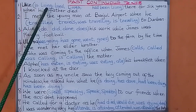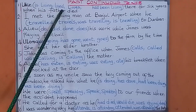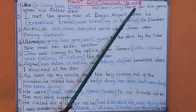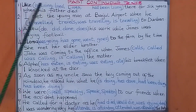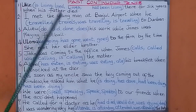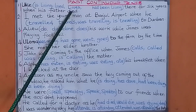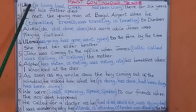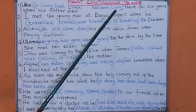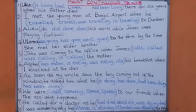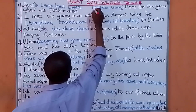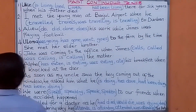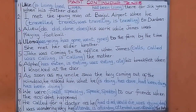Question one: Uke — is living / lived / lives / had been living — there for six years when his father died. When his father died, remember, that's past tense. So we underline: Uke had been living there for six years when his father died.